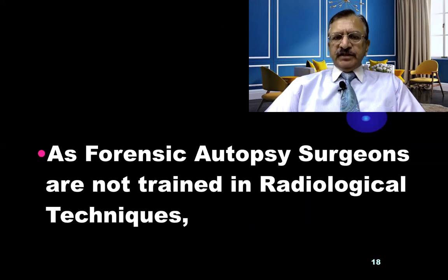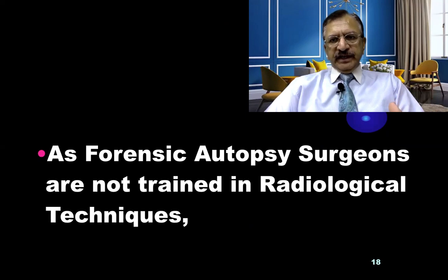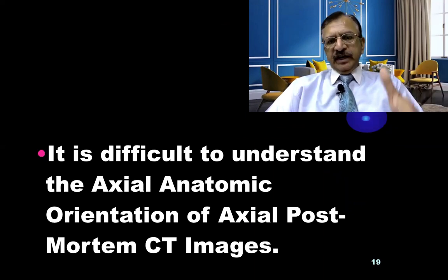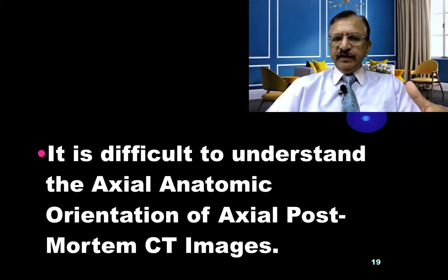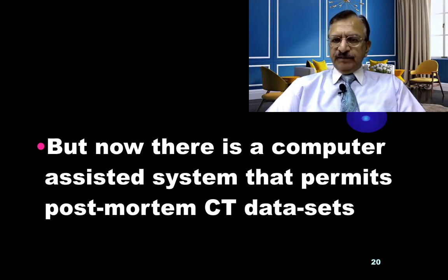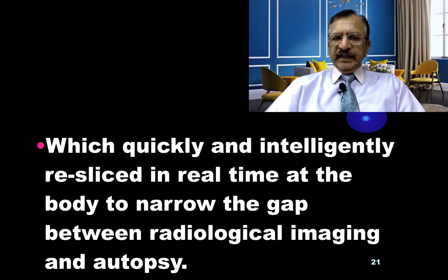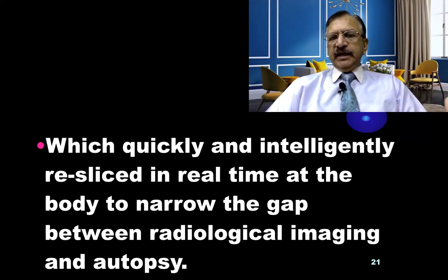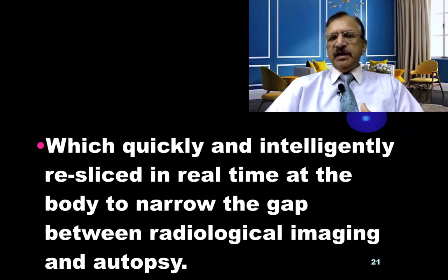For a forensic autopsy surgeon, it is important to know that they are not trained for radiological techniques, so they cannot understand the radiological image. It is difficult for them to understand the axial anatomic orientation of axial post-mortem CT images. But now, computer-assisted systems permit post-mortem CT data sets to be quickly and intelligently re-sliced in real time. This narrows the gap between radiological imaging and autopsy, as the re-sliced images no longer appear as radiological images but appear as a real-time view of the body.